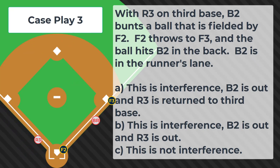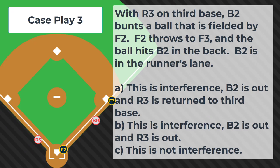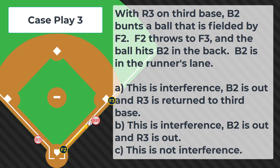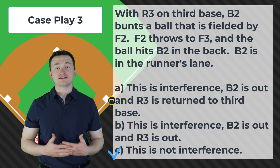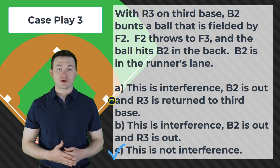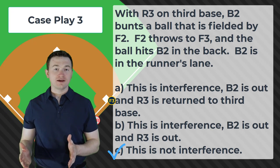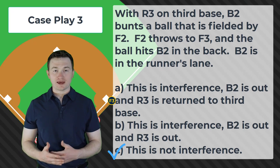Case play number three. With R3 on third base, B2 bunts a ball that is fielded by F2. F2 throws to F3 and the ball hits B2 in the back. B2 is in the runner's lane. Is this A — interference, B2 is out and R3 is returned to third; B — interference, B2 is out and R3 is out; or C — this is not interference? In this case play, the runner's lane does apply since the ball is being thrown from the catcher to first base. And because the batter runner is in the runner's lane, there's no interference and this play stands.